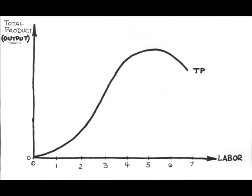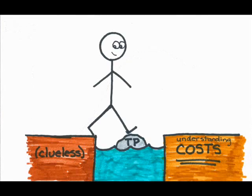How? Well, variable costs are related to variable inputs. The total product curve is the relationship between the variable resource, labor, and the amount of output. I can use this as a stepping stone to where I want to be, which is a relationship between output and the cost of the variable resource. All I need to do is attach a price tag to my labor.